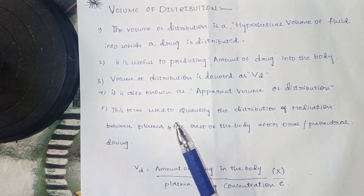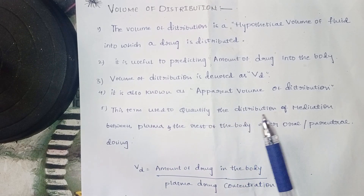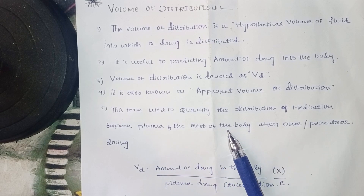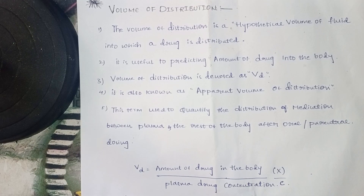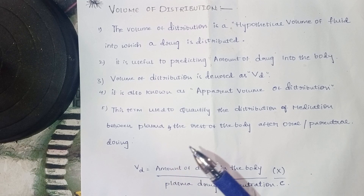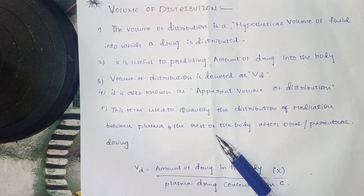This term is used to quantify the distribution of medication between the plasma and the rest of the body after oral or parenteral dosing. It is defined as the amount of drug in the body, and it is a pharmacokinetic parameter. Pharmacokinetics is ADME, and this parameter relates to how the drug is distributed in the body.